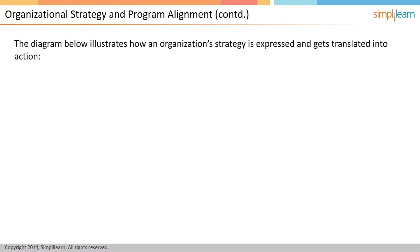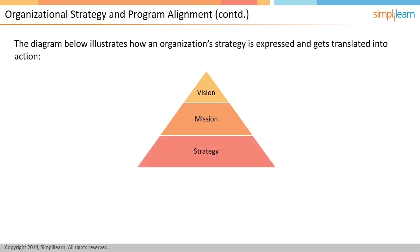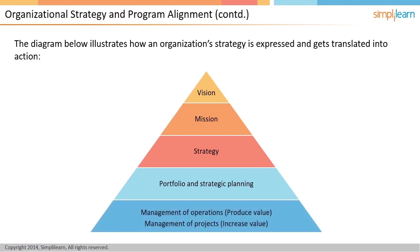This diagram illustrates how an organization's strategy is expressed and gets translated into action. At the top level is the vision, which expresses the goal of an organization. The mission expresses the sense of purpose for the organization and enables it to realize the vision. The vision and mission translate into a strategy. Portfolio and strategic planning occur, wherein the strategy manifests itself into portfolio decisions. In line with the portfolio, the organization undertakes some operations and some projects. Projects are aimed at creating additional value or increasing the overall value of the organization, while operations are meant to actually realize or produce the value.